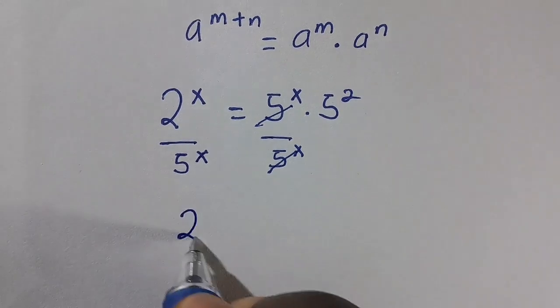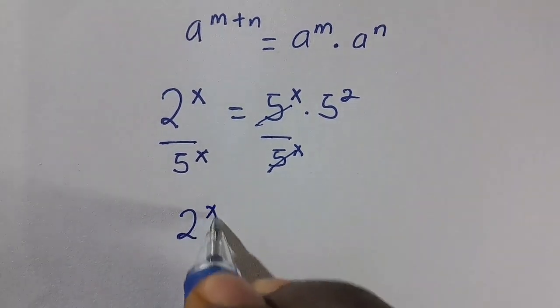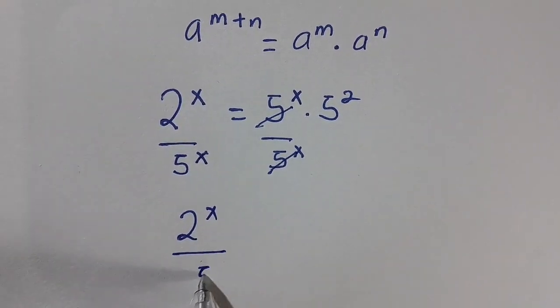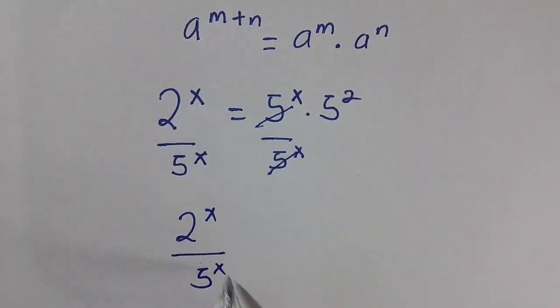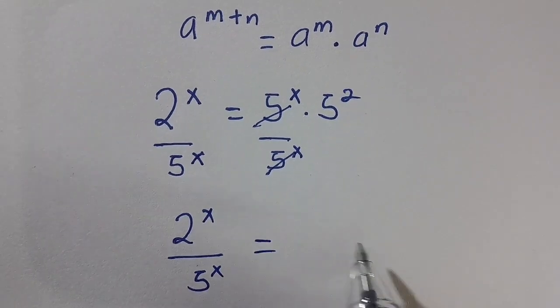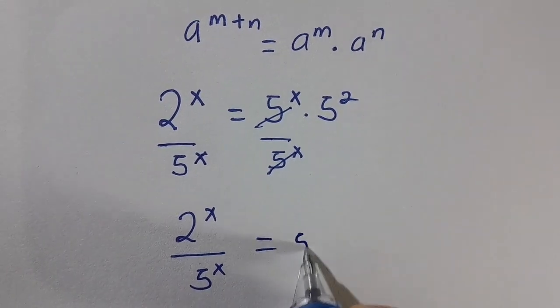And we have 2 raised to the power x divided by 5 raised to the power x equals 5 raised to the power 2.